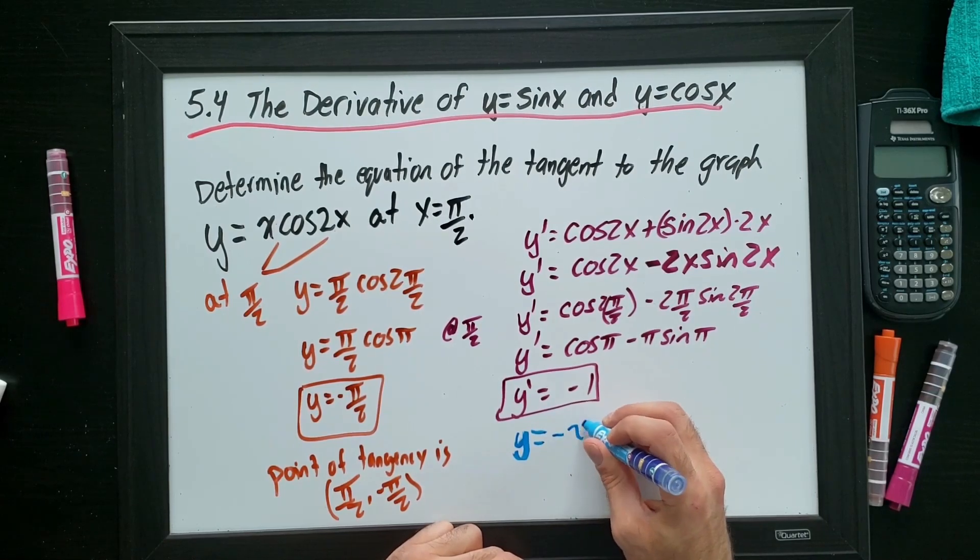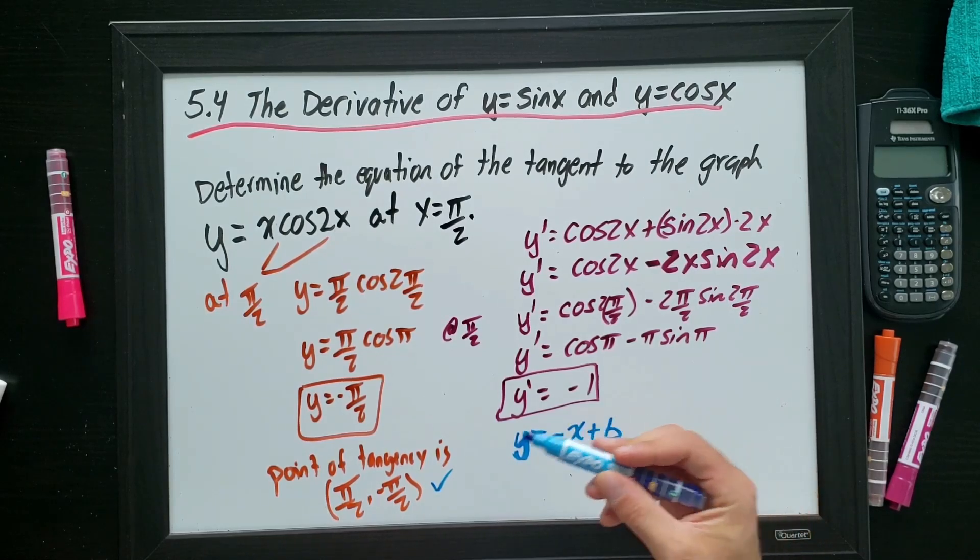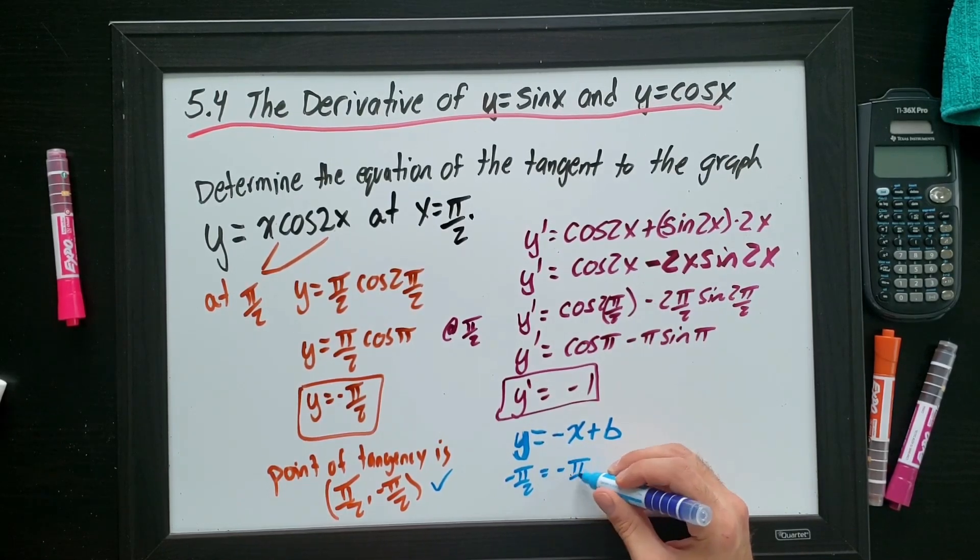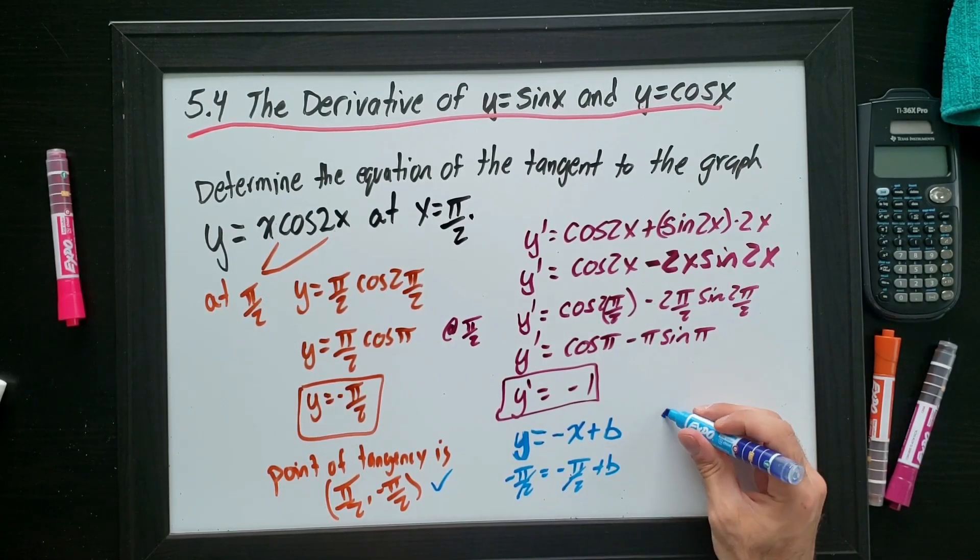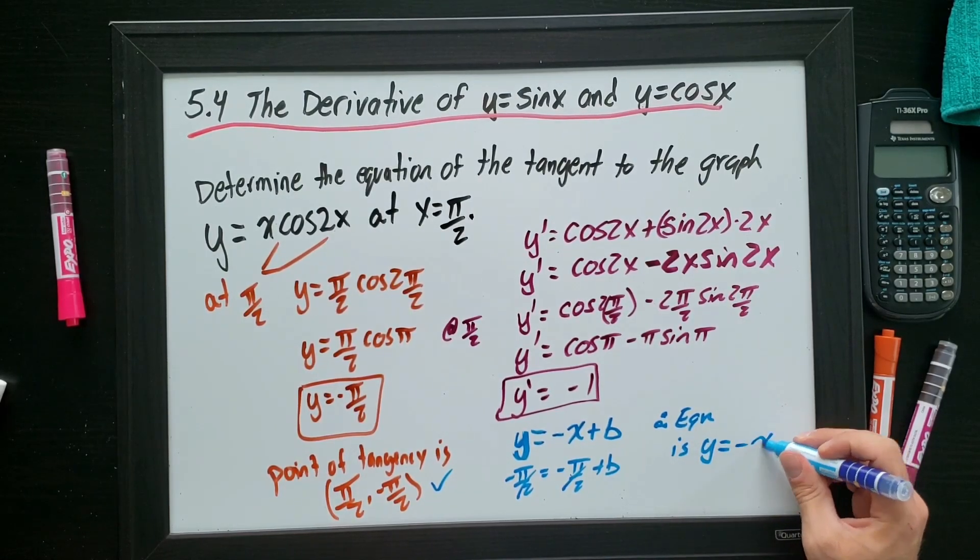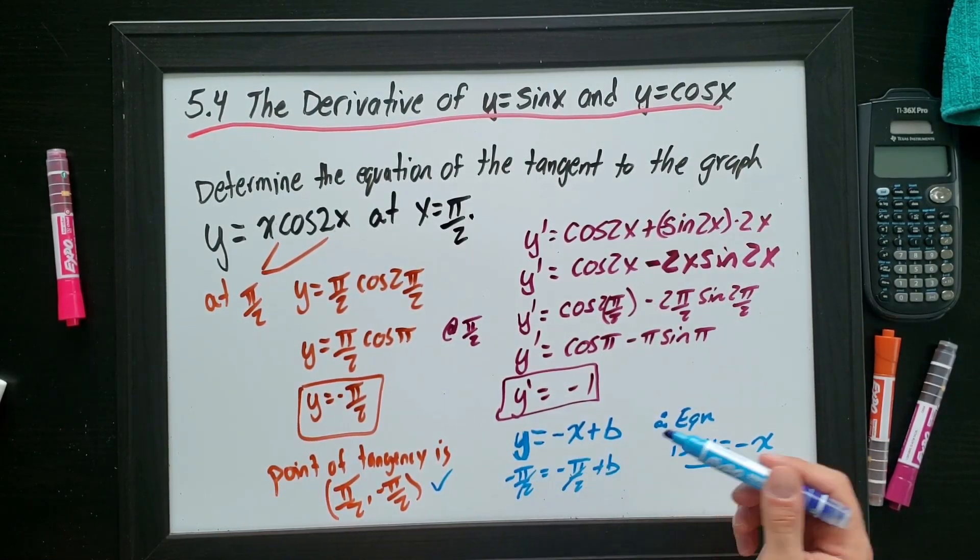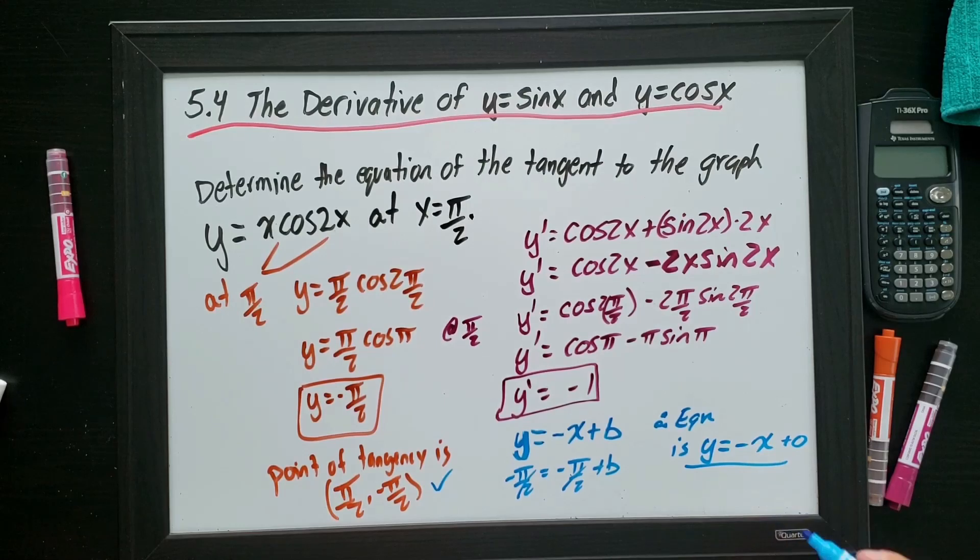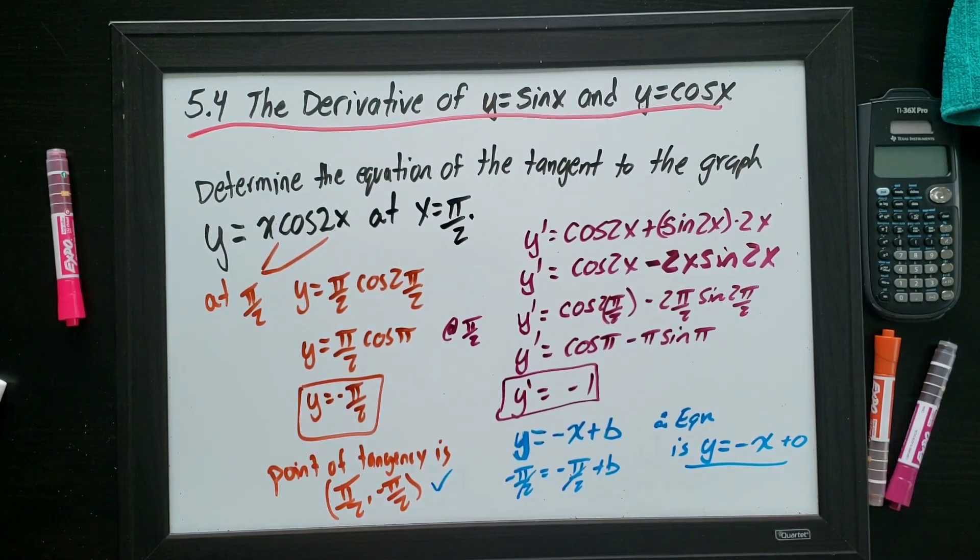So now I'm going to use my slope. Y equals negative 1x plus b. And I'm going to replace x and y with the point that I know. I only know one point, the point of tangency. So I can say negative pi over 2 equals negative pi over 2 plus b. These are the same, which means there's no y-intercept. It's 0. Therefore, equation is y equals negative x. Done. Okay. I plugged in my point of tangency. I realized that if I bring this over, I'm going to get 0. So b equals 0. I can put plus 0 here. But obviously, I would never do that in my entire life. Okay. And that's it. Finding the slope of the tangent for a trig function is just as easy as we've been experiencing in the previous sections.